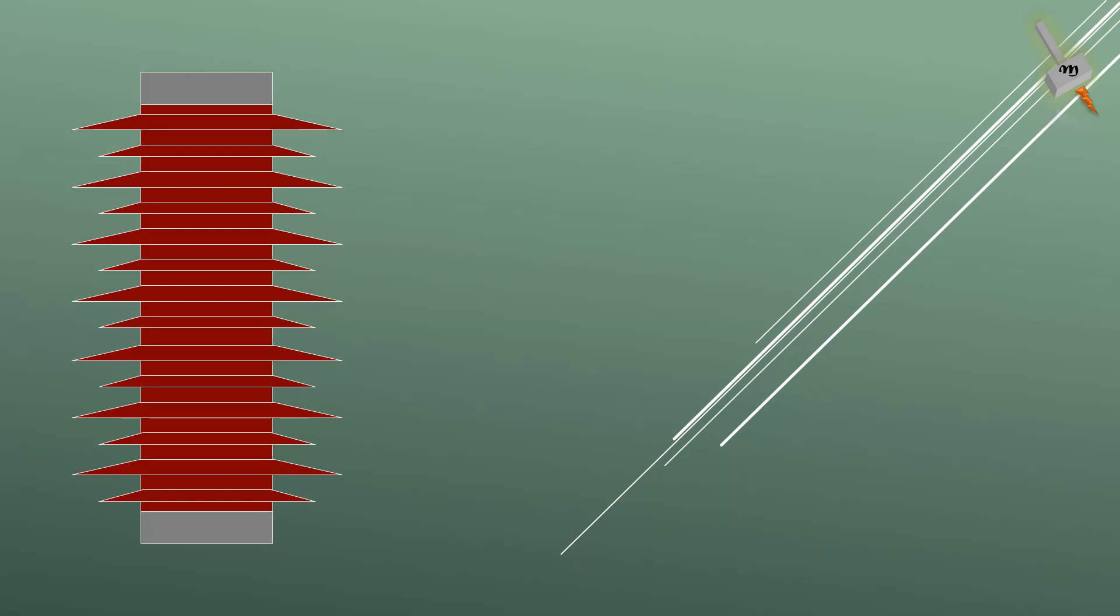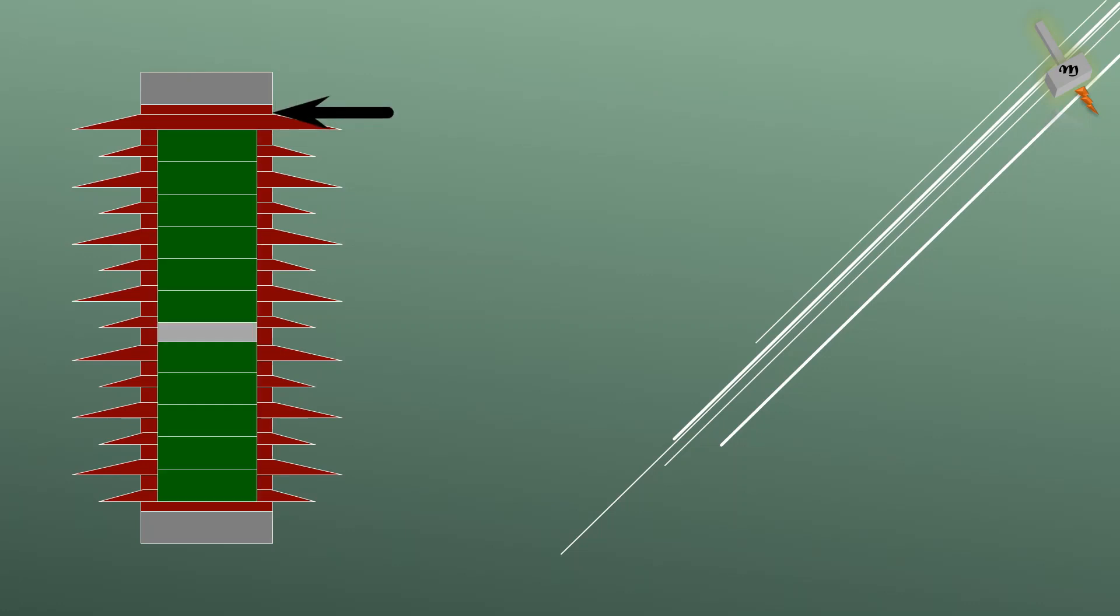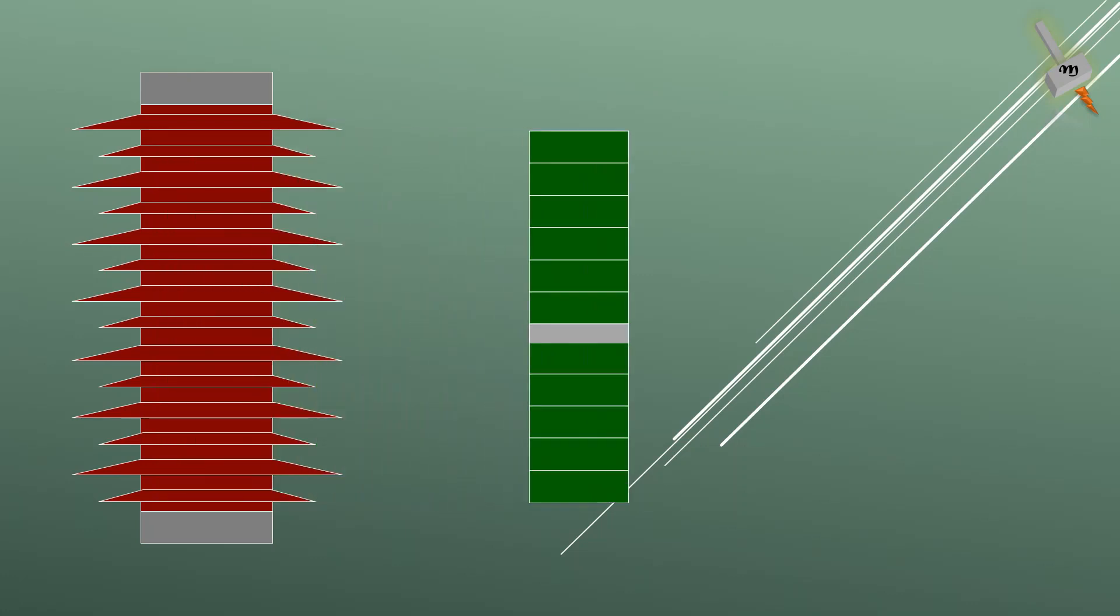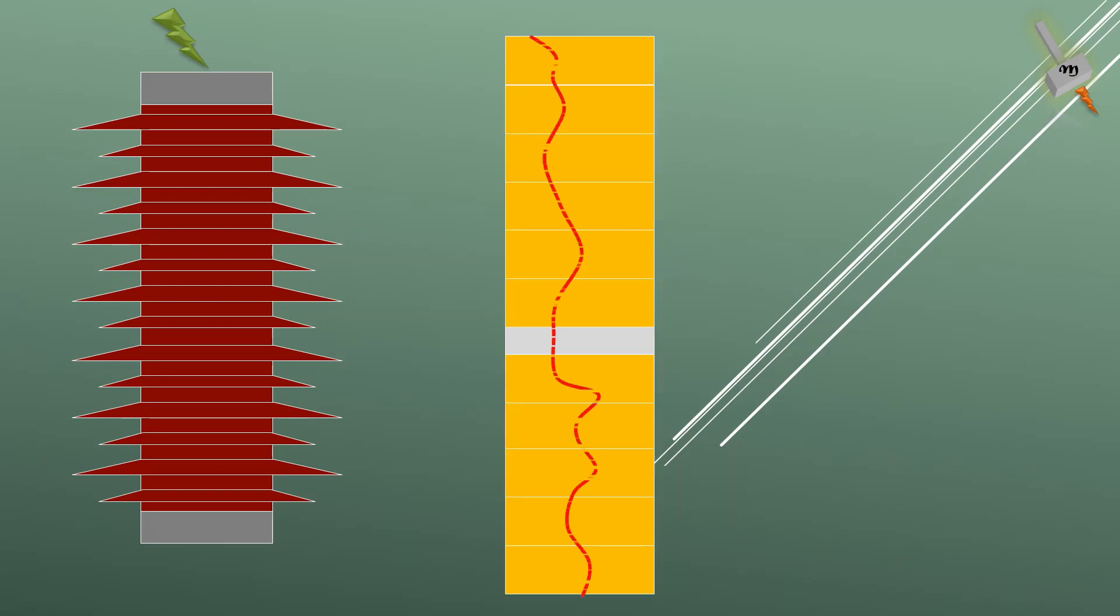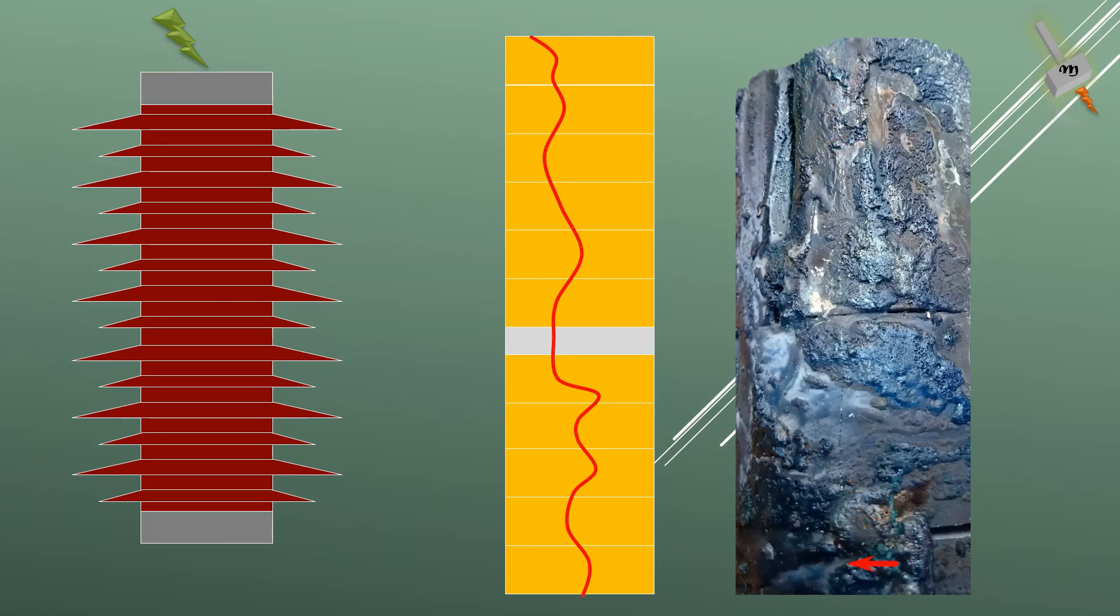Now moving to type B design. They have a small air column or no air column present within the arrestor. The initial process of MOV stack failure and the arc on the MOV stack happens in the same way as it happened in the type A design.